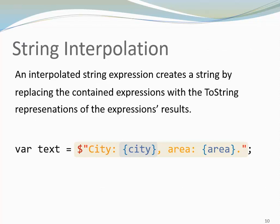City would be replaced with the value of the variable city. For example, Paris. And area would be replaced with the corresponding area. For example, 40.7 square miles.